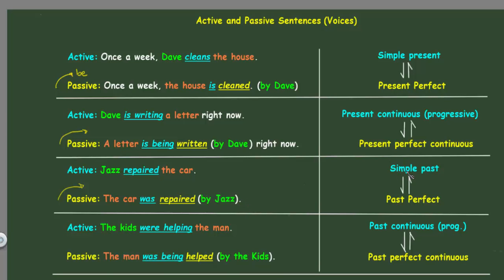As you can see, the simple past active brings us to the past perfect passive, and vice versa — the past perfect will bring us back to the simple past.